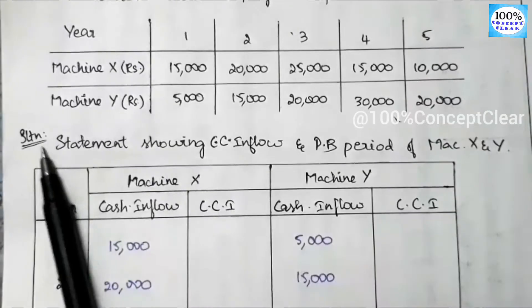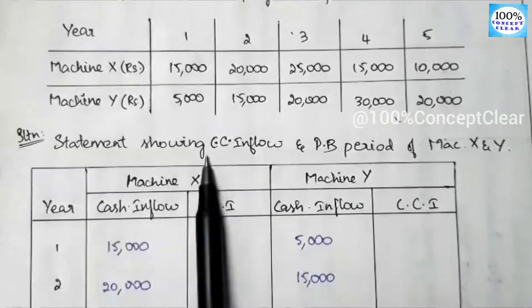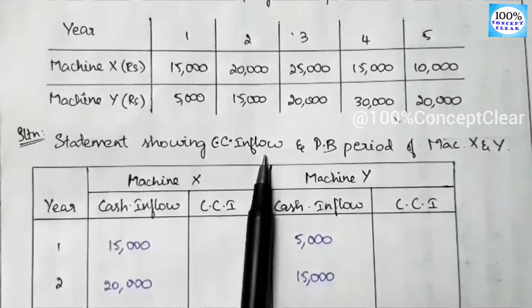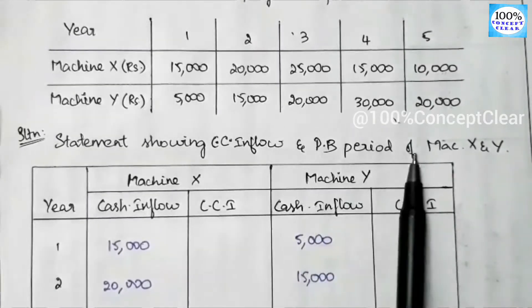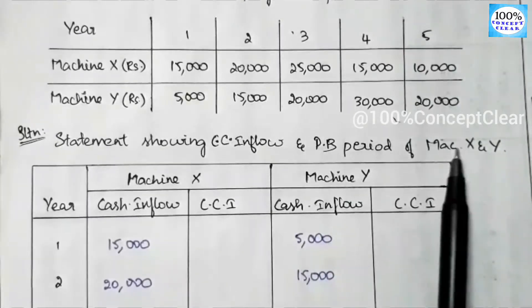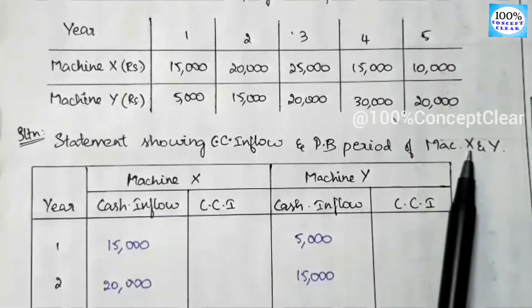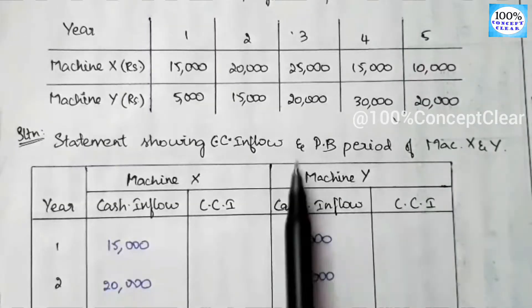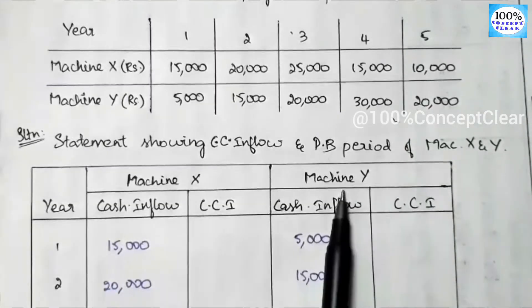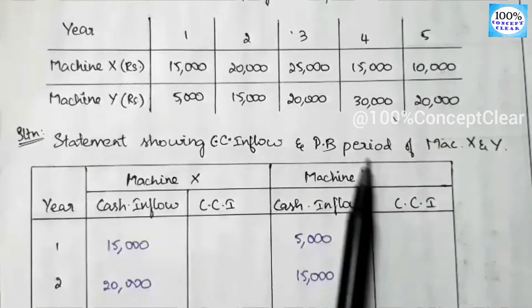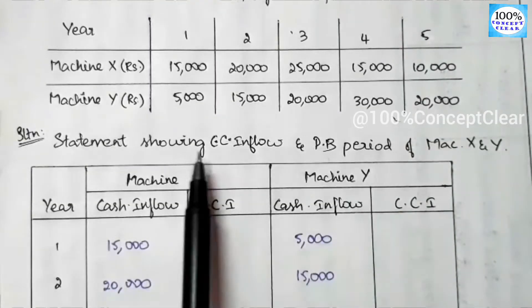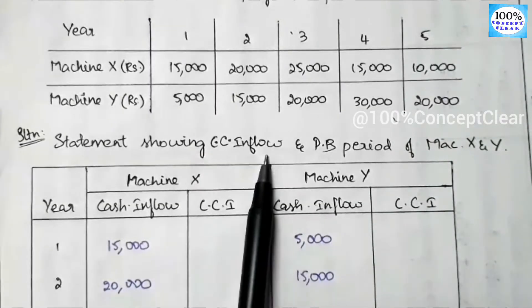Now let's look at the solution. The statement is showing cumulative cash inflows and payback period of Machine X and Y. For both machines, we will calculate the cumulative cash inflows.